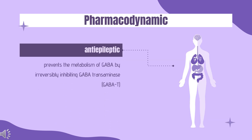Pharmacodynamics: Vigabatrin is an anti-epileptic agent chemically unrelated to other anticonvulsants. It prevents the metabolism of GABA by irreversibly inhibiting GABA transaminase (GABA-T). As an irreversible inhibitor, its duration of effect is thought to be dependent on the rate of GABA-T resynthesis rather than on the rate of drug elimination.